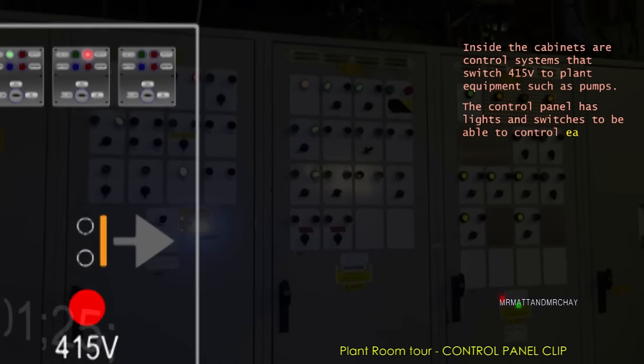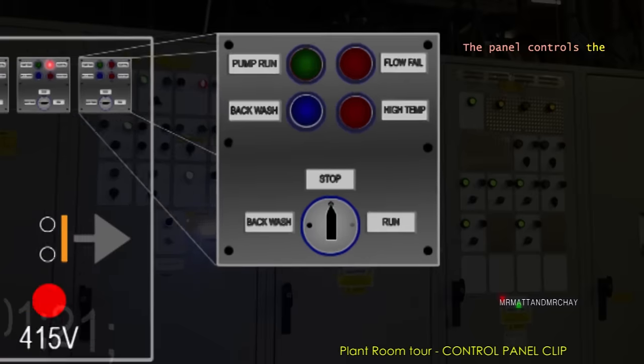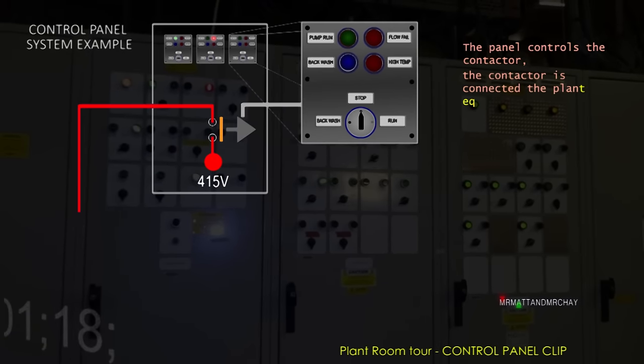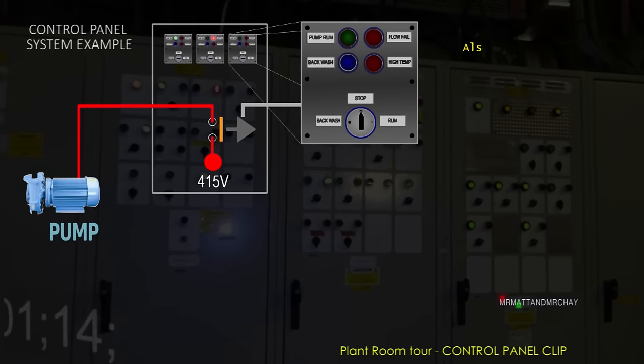The control panel has lights and switches to be able to control each system. The panel controls the contactor. The contactor is connected to the plant equipment. In this example it's a pump. Also connected are sensors.